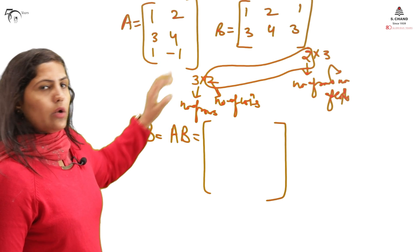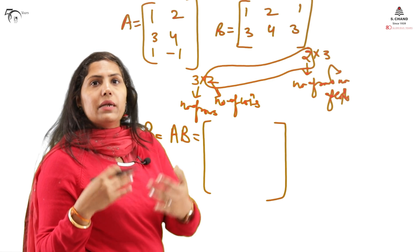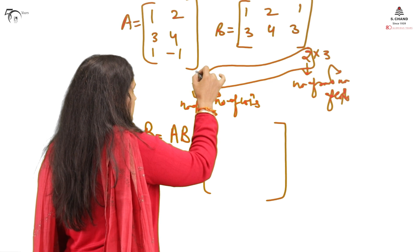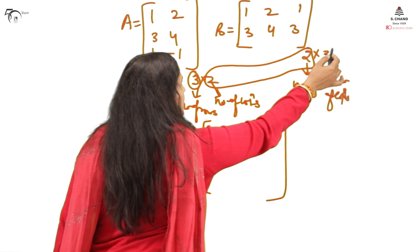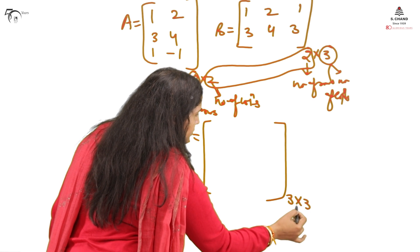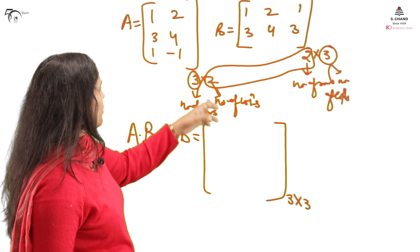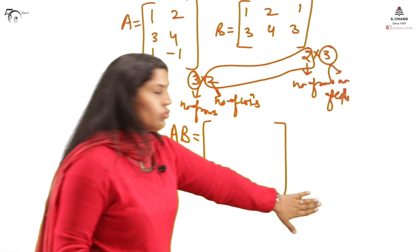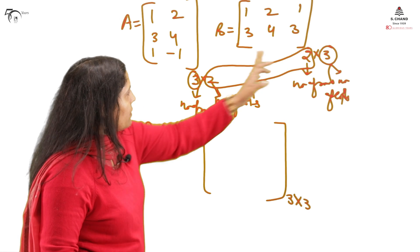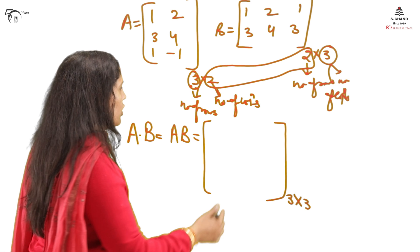After multiplication, what will be the order of the result? The order will be 3×3. The result takes the number of rows from the first matrix and the number of columns from the second matrix. The middle values — columns of first and rows of second — must be equal; the outer values give the result order.